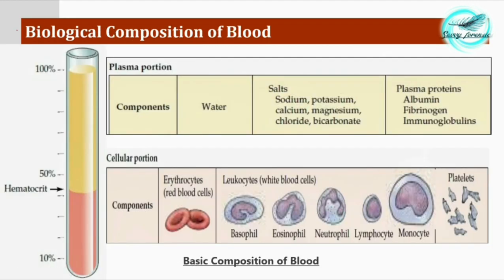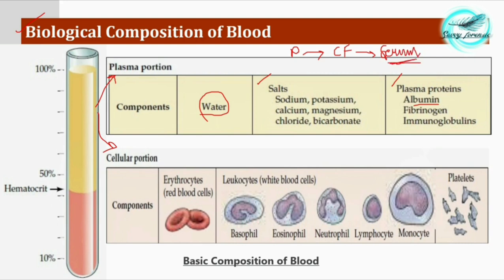Moving to the biological composition of blood: blood has a plasma portion as well as a cellular portion. The plasma portion contains majorly water, other salts, and plasma proteins. If we remove the clotting factors from plasma, what remains is termed serum. Serum is devoid of any clotting factors. Clotting factors include fibrinogen and other factors responsible for the clotting of blood.